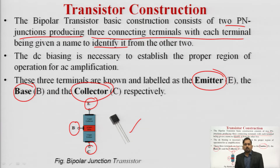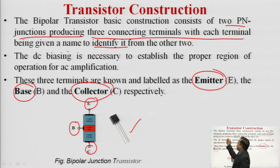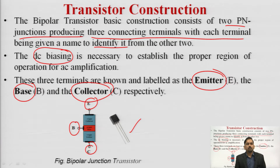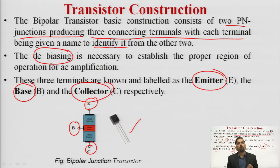After the construction, we will see the doping profile, width, and area for the emitter, base, and collector terminals. Before that, DC biasing is required to establish the proper region of operation for AC amplification, since our basic concern is that amplification should be performed by the transistor. We need to achieve a specific region with proper DC biasing to obtain maximum AC amplification.